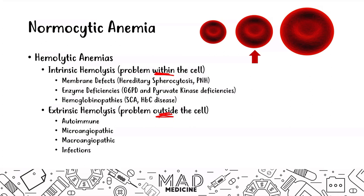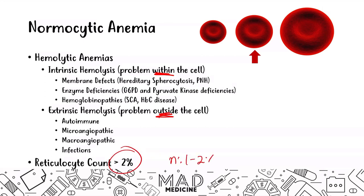Because you are lysing red blood cells, your bone marrow is going to produce more red blood cells. Because you amp up production, you're going to see more immature red blood cells being secreted out of the bone marrow. In hemolytic anemias, you're going to see a reticulocyte count that is greater than 2%. Normal is 1 to 2%, but with anemia and significant decrease in red blood cells, you're going to be increasing your reticulocyte count. In non-hemolytic normocytic anemias, you're going to see a normal reticulocyte count.